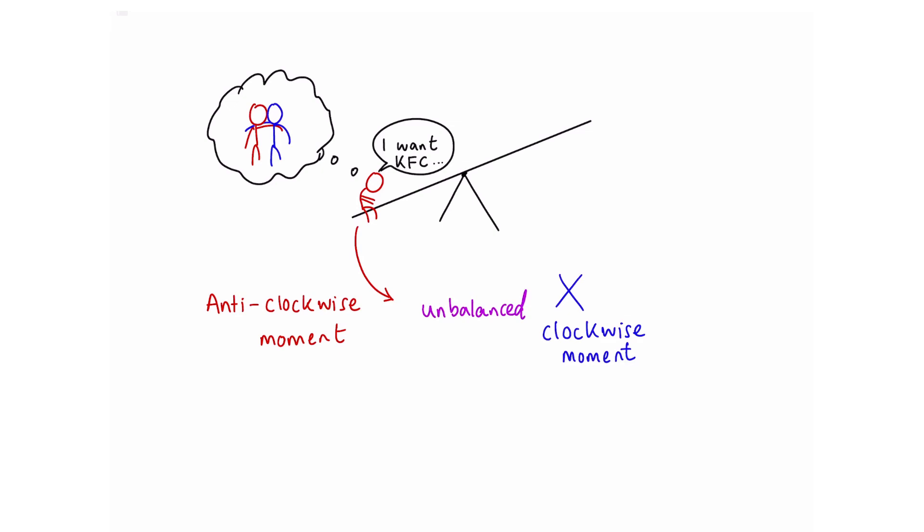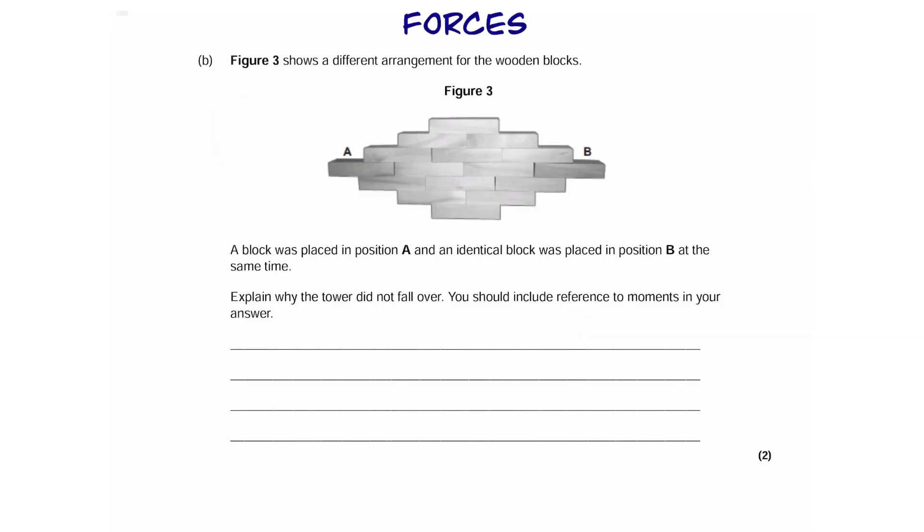So, in this question, the fact that it's not moving means that A and B must have equal and opposite moments. So, we're going to say, the anti-clockwise moment by A, and the clockwise moment by B, which is all one mark together, by the way, are equal. That's your second mark. I hope you clocked that.